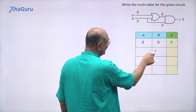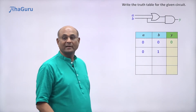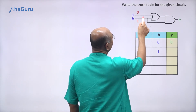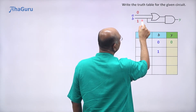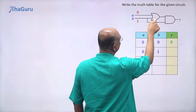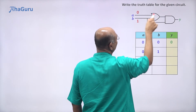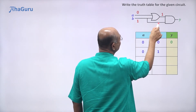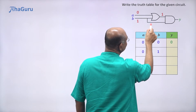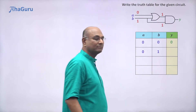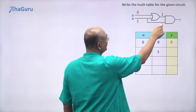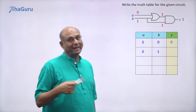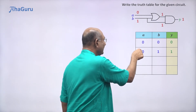The next case is A=0, B=1. This input is zero, this input is one. Zero plus one through the OR gate gives output one. That output becomes the input of the AND gate, and the other input is B which is also one. So one AND one is one, and the value of Y is one.